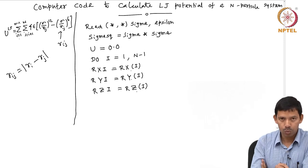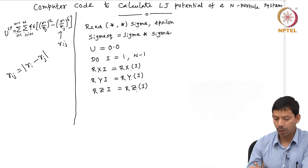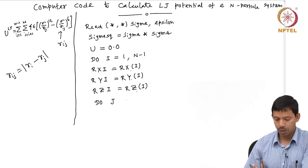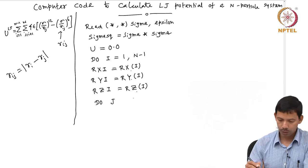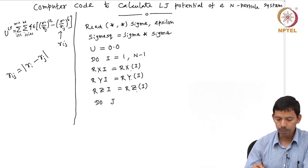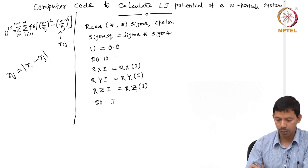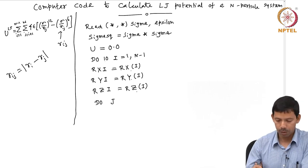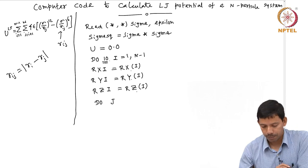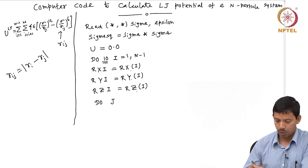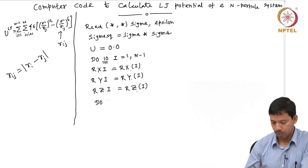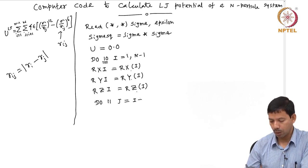Since I have to calculate pair interactions of i with j, inside this outer loop I have another inner do loop: do 11 j, where j goes from i plus 1 to n.